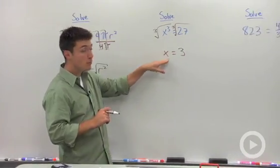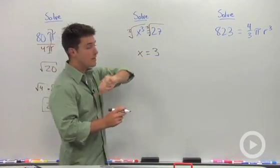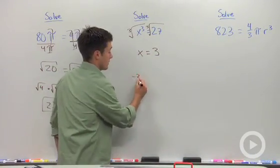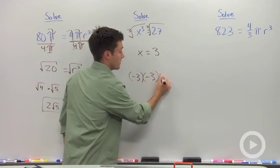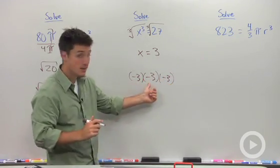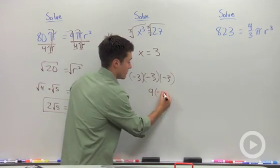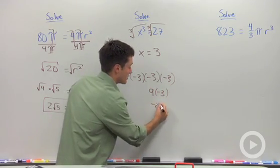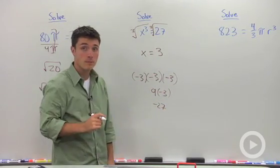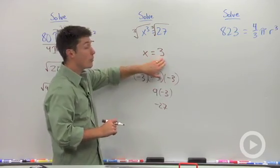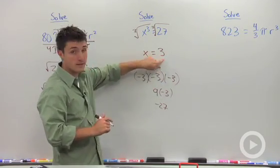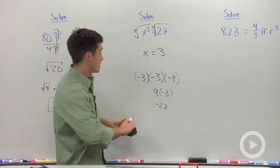If we go back to this cube root, however, if I said x could be negative 3, let's just look at this real briefly. Negative 3 cubed. Negative 3 times negative 3 is 9. So we'll have 9 times negative 3, which is negative 27. So notice that with the cube root, you're only going to end up with this one answer. The negative is not going to be one of your answers.